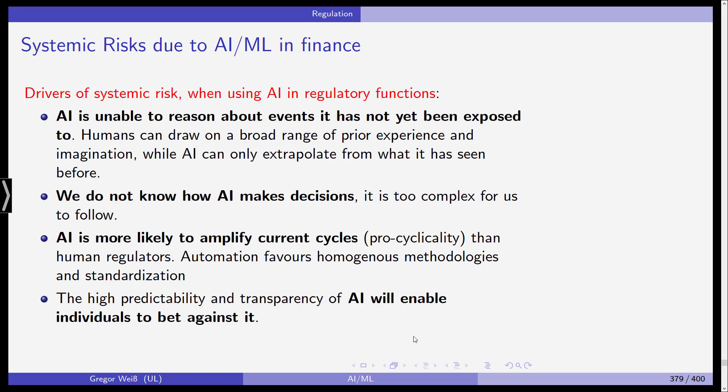The high predictability and transparency of AI will enable individuals to bet against it. Imagine all investors in the stock market were AI methods and automated bots trained on data, trading based on AI and machine learning algorithms. You would only need one human to understand how all these bots and robo-advisors and trading algorithms work in tandem. That human would be able to beat those systems quite easily, because all these models are predictable and usually quite transparent in how they function.